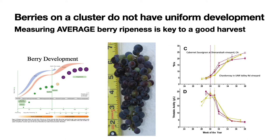Berries on a cluster do not have uniform development, as can be seen here. In the left-hand corner we have berry development over the course of a season. In the middle here we can see a Cabernet Sauvignon grape cluster that is ripening non-uniformly. So it's important for all those berries to get fully ripe, although it's impossible for them to all be equal to each other.